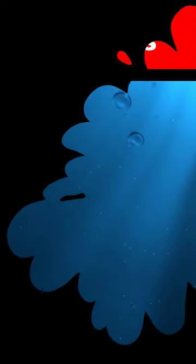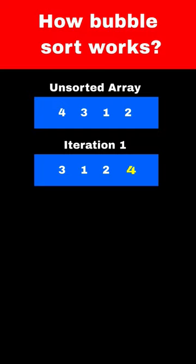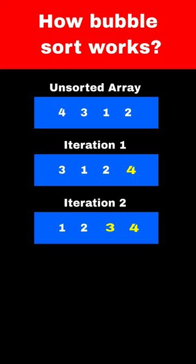The bubble sort algorithm works in a similar way. In the first iteration, it will find the largest element and put it at the end of the array. Then in the second iteration, the second largest element will come to the second-to-last position, and so on.